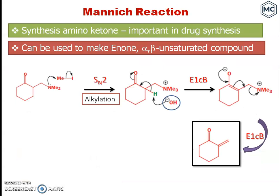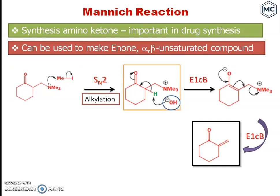The synthetic application of the Mannich reaction is very important in target synthesis because we use the amino ketone. This amino ketone can be used to make alpha-beta unsaturated compounds. The Mannich base, on alkylation with methyl iodide — this is dimethylamine — undergoes an exhaustive methylation reaction to form a quaternized salt. In the presence of base, this quaternized salt can undergo Hofmann-type elimination, exactly like dehydration in the final step of aldol condensation.